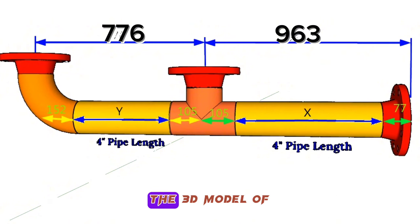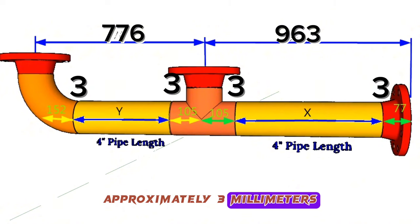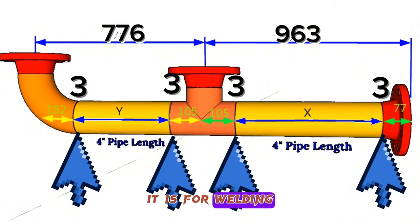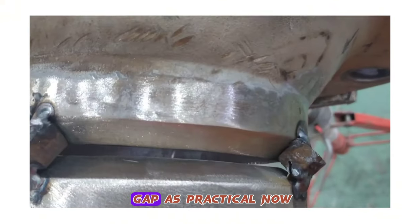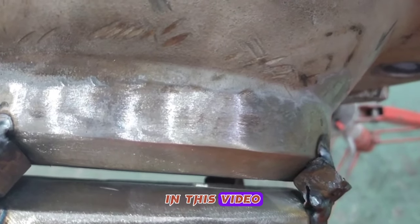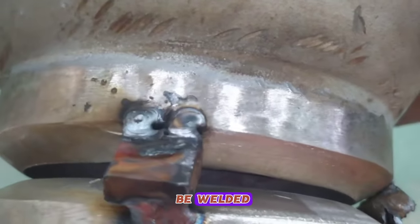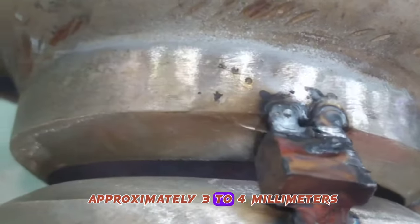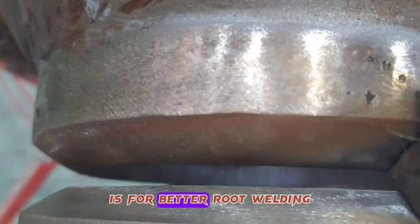Let's write these dimensions on the 3D model of the pipeline. During fit-up, between pipe fittings there should be a gap of approximately 3 millimeters for welding. There are pipe fitting joints in 4 places in this pipeline, so there will be a 3 millimeter gap in each joint. This 3 to 4 millimeter gap is required for better root welding.